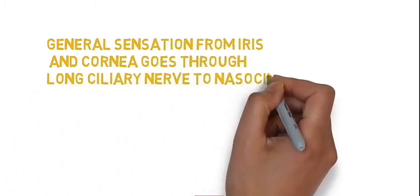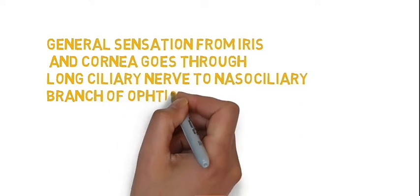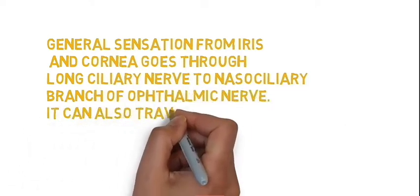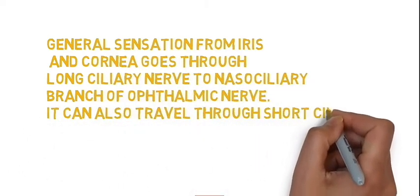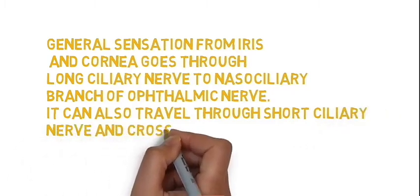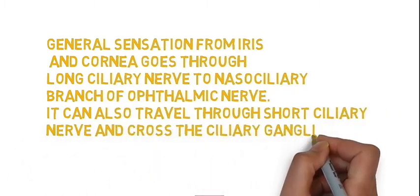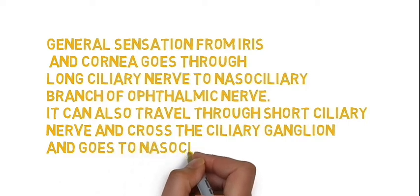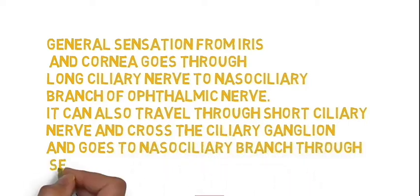It can also travel through the short ciliary nerves, cross the ciliary ganglion, and go to the nasociliary branch through the sensory root of the ciliary ganglion. You can see this in the diagram.